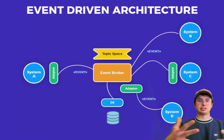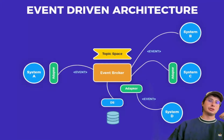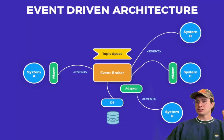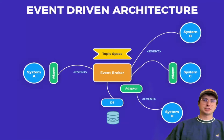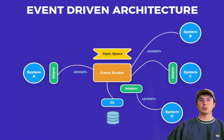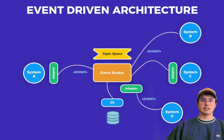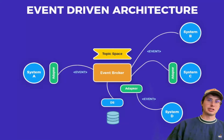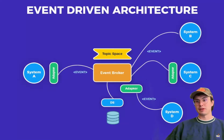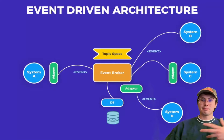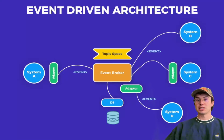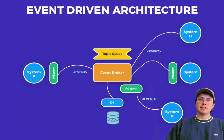The benefits of event-driven architecture include loose coupling, scalability, and resilience, allowing systems to adapt to fluctuating workloads — particularly useful when time-based scheduling wouldn't work due to high variation in when data is produced or updated.